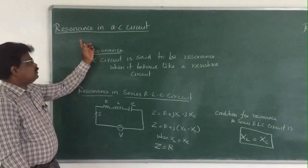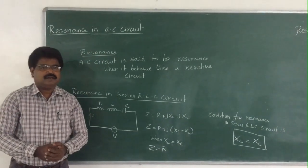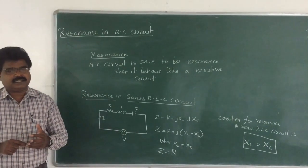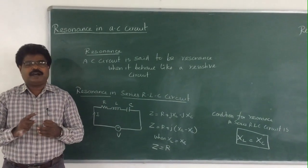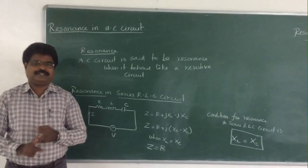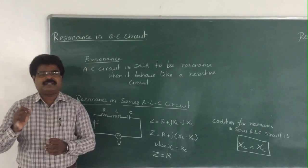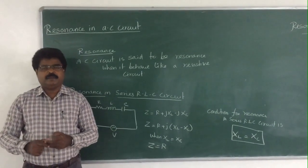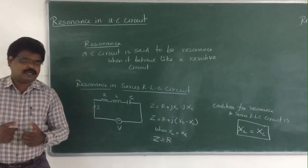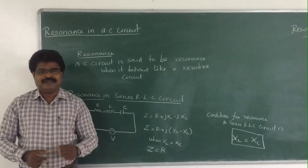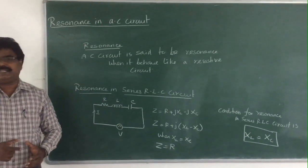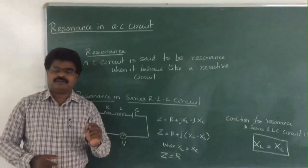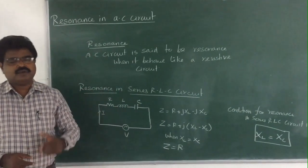Now we discuss resonance in AC circuits. First, to achieve resonance, the circuit must consist of resistance, inductance, and capacitance — all three components are mandatory. Not every circuit can achieve resonance. Whether the components are in series or parallel does not matter, but all three must be present.